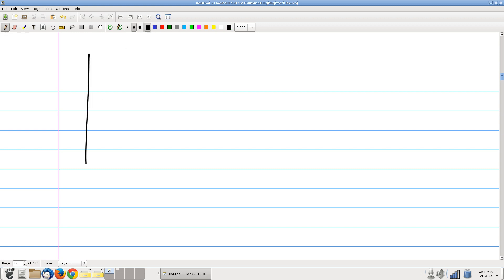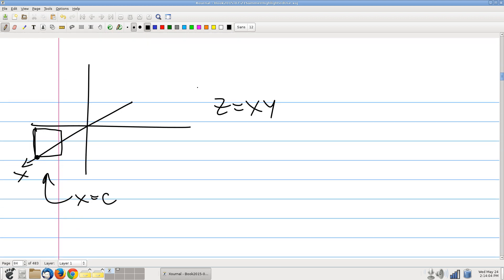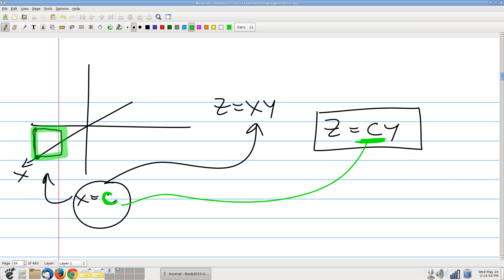OK, first, if we take cross sections perpendicular to the x-axis, well, perpendicular to the x-axis means I'm setting x equal to various constants. So my equation z equals xy, that was the equation we were given there, equals xy, that turns into, well, let's see, x is a constant. And so what we get is z equals a constant times y. So I get a bunch of lines of varying slope in these planes. Does that make sense?